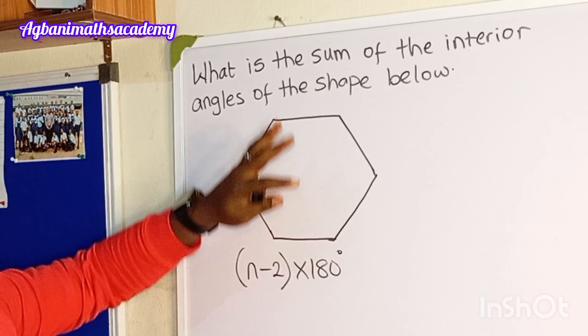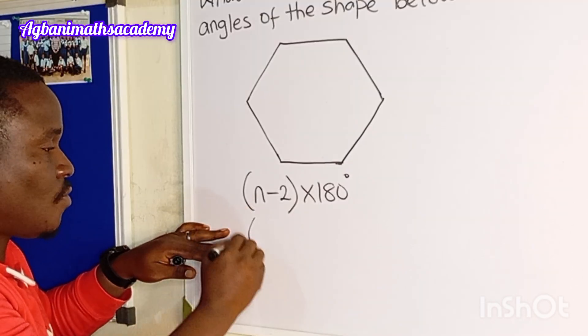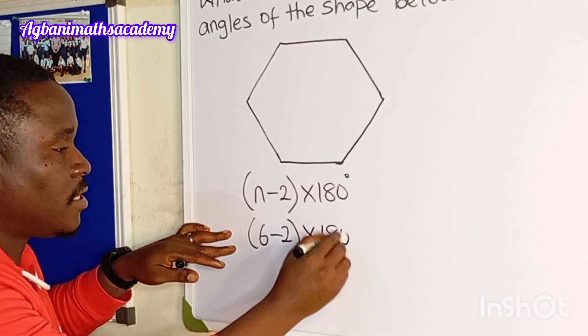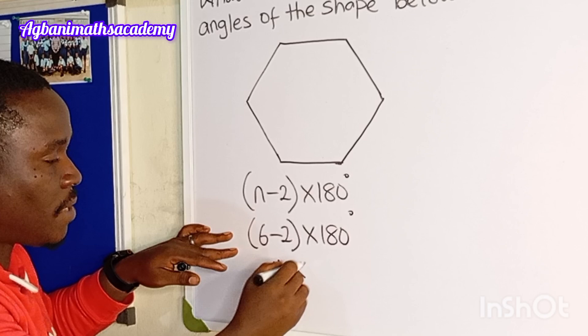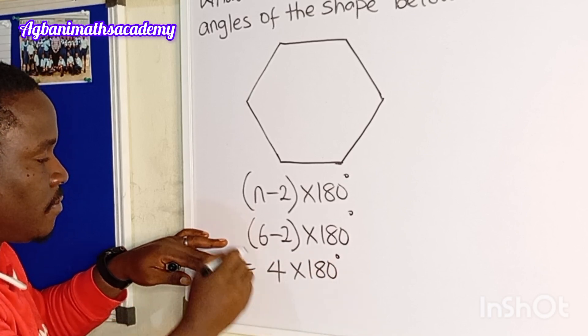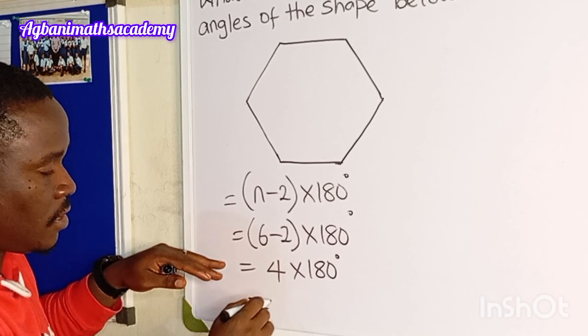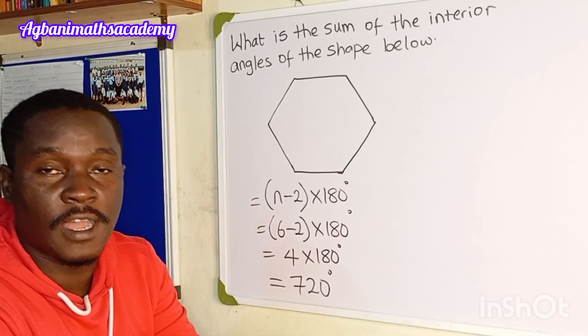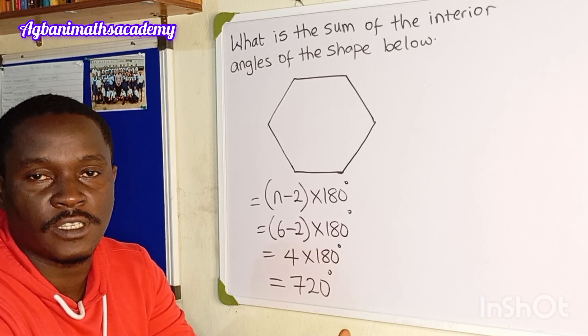So since we know that this polygon has six sides, we have replaced n with 6. So we have 6 minus 2 multiplied by 180 degrees. 6 minus 2 is going to give us 4. So we have 4 multiplied by 180 degrees. And our final answer is 720 degrees. So the sum of angles in this hexagon is 720 degrees.